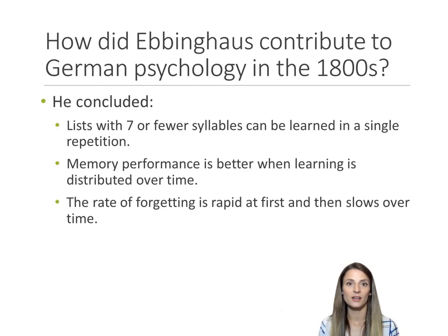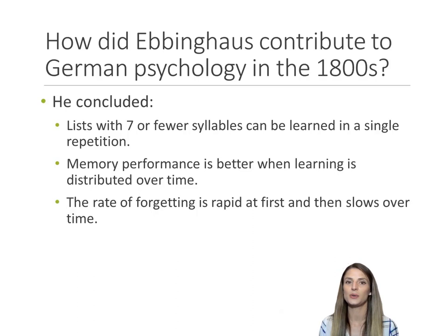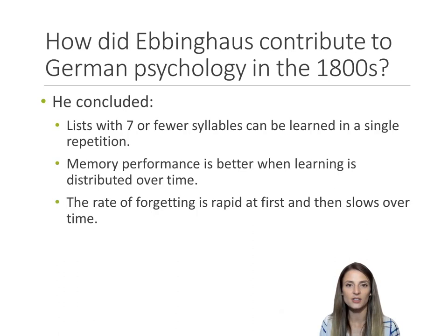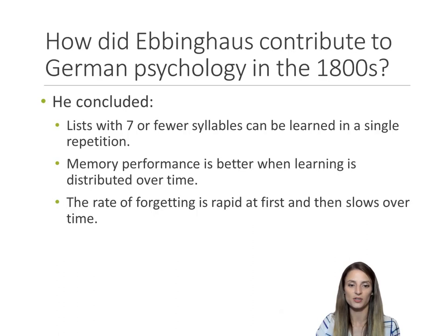Ebbinghaus studied only his own memory. He did not bring in freshman students from Gen Psych and ask them to complete memory tests. He spent months at a time trying to memorize different lists of words and recall those lists. Lists of seven or fewer syllables can be learned in a single repetition. Memory performance is better when learning is distributed as opposed to cramming. The rate of forgetting is rapid at first and then slows over time — all true of most humans in most cultures.